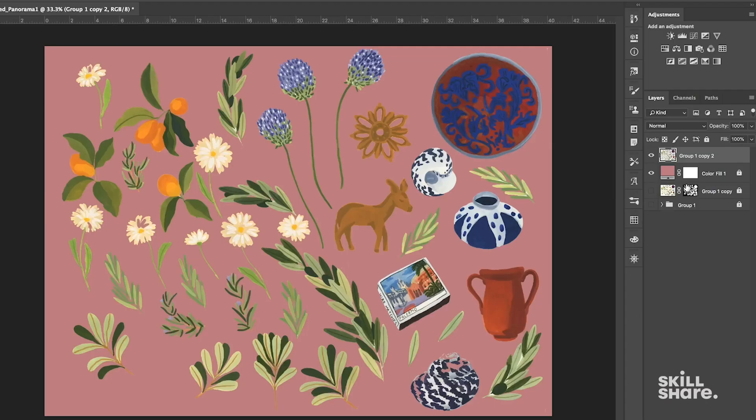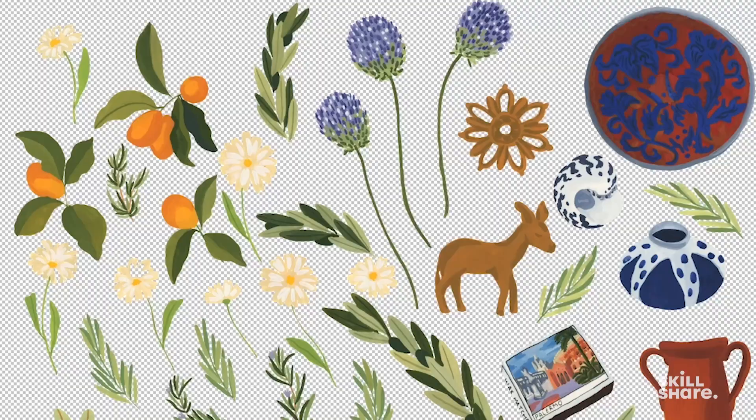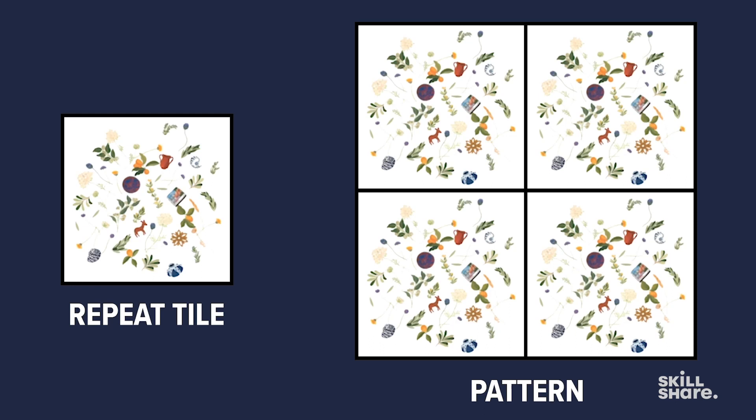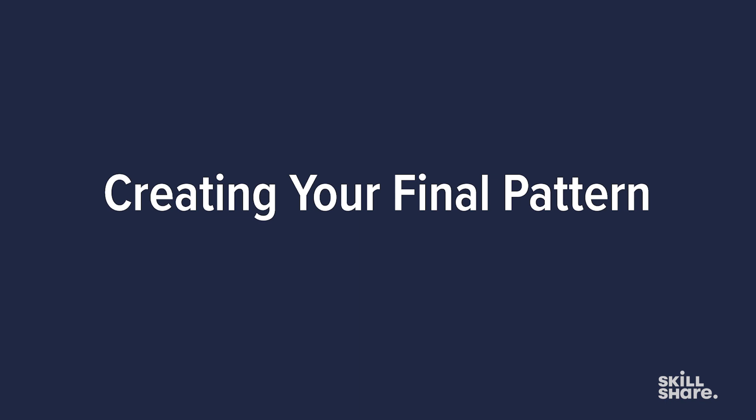Now that we have all of our elements deep etched, we're going to go ahead and arrange them into a tile which we will use to create our pattern. The repeat, also known as a tile, is what I'm calling the arranged elements which we're going to copy and paste over to create our pattern. The next part of the process is repeating out our tile so that it repeats seamlessly on each side.